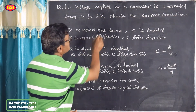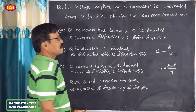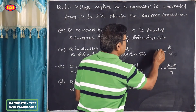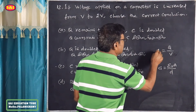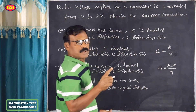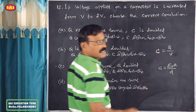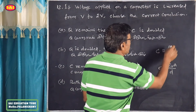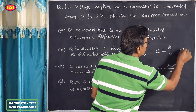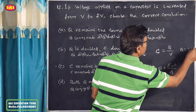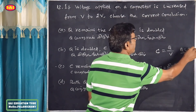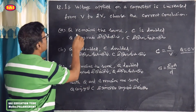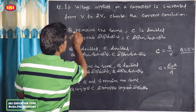Q remains the same — given that capacitance is constant. V is doubled, so Q is doubled. Double — wrong. Q remains the same — therefore wrong.